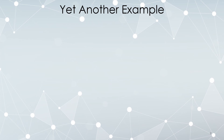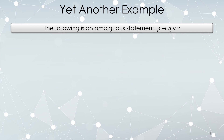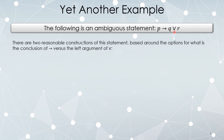Here is a statement that is ambiguously written: P implies Q or R. The ambiguity has to do with the conditional arrow compared to the disjunction. There are two ways we could construct this statement. We could begin by disjoining Q or R and then use that as the conclusion of the conditional, giving P implies the entire statement Q or R. Or we could form the conditional P implies Q first and then disjoin it with R. Both are legitimate statements, but they are not the same thing.